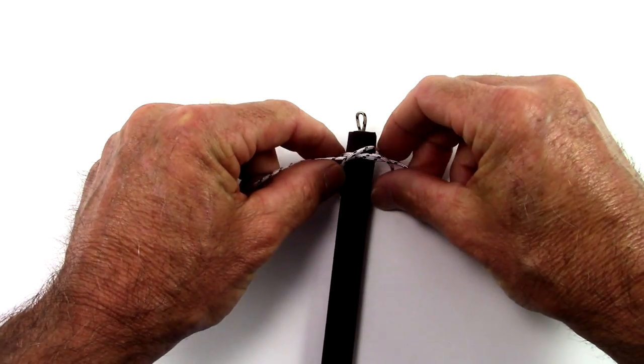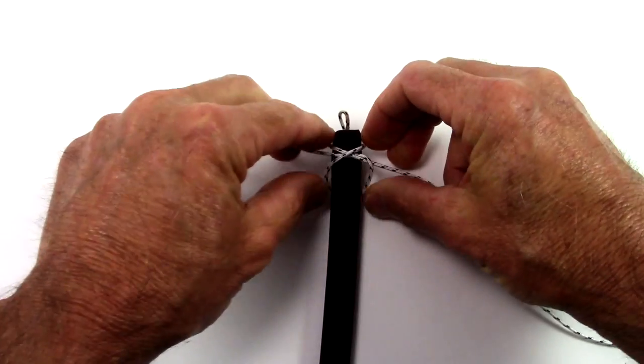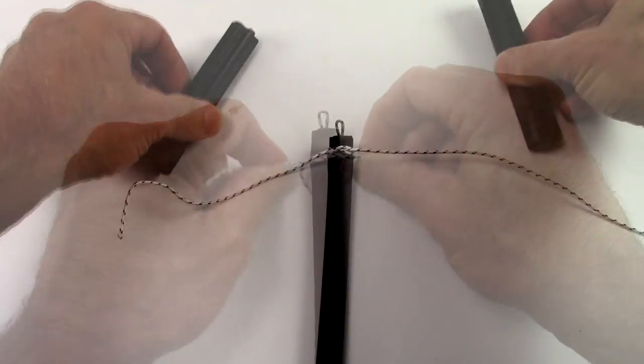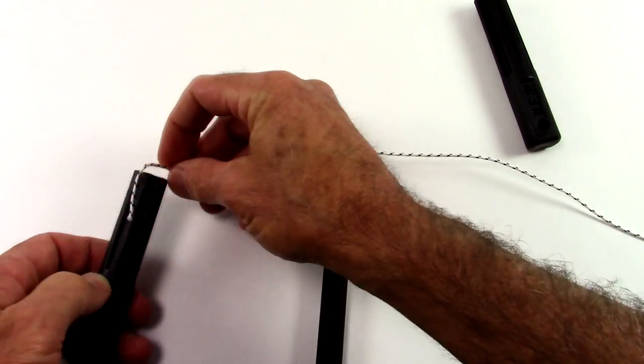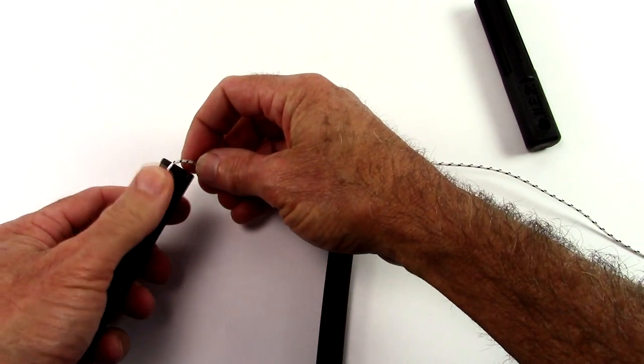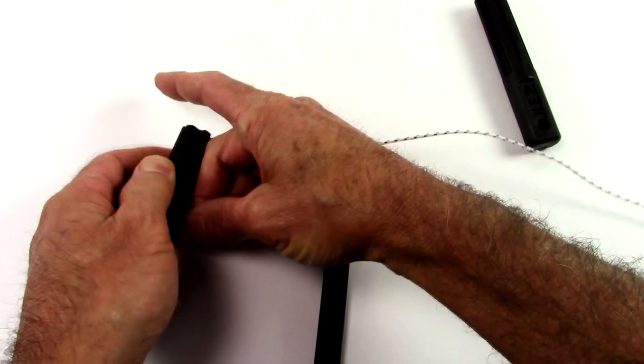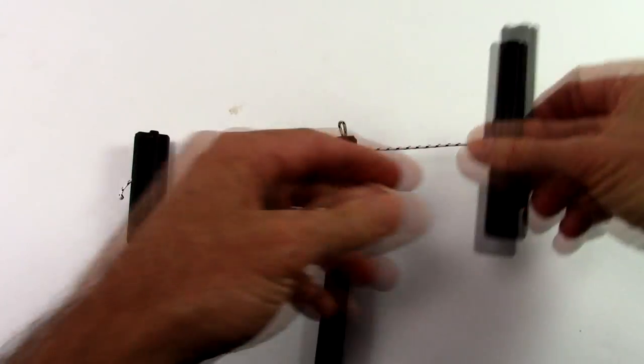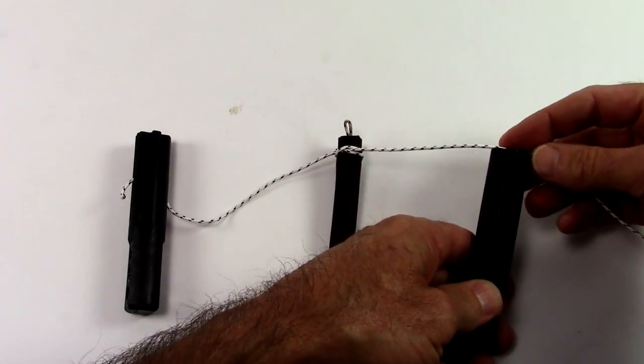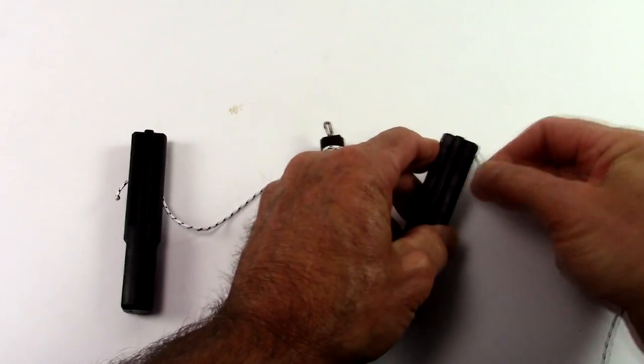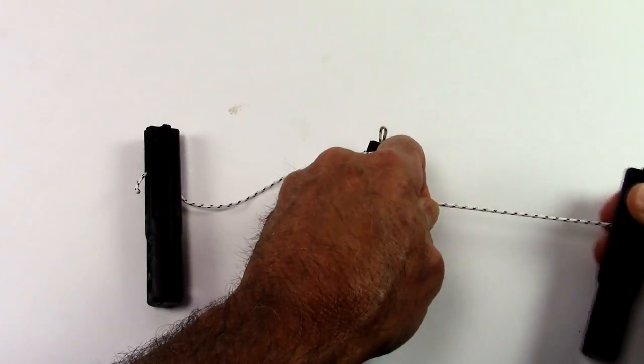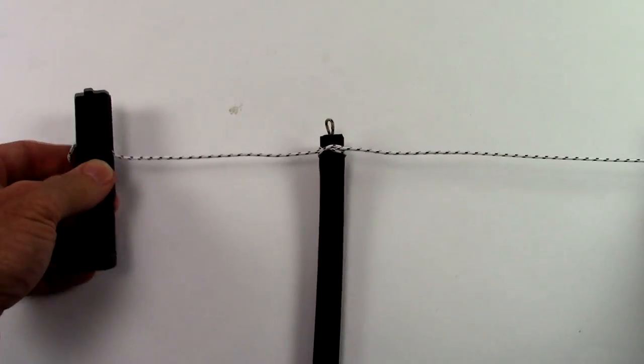You will need to tighten the constrictor knot by pulling on both ends of the cord. Using band tying tools will allow you to pull this knot extremely tight. Test your work to make sure the loop does not slip out of the band.